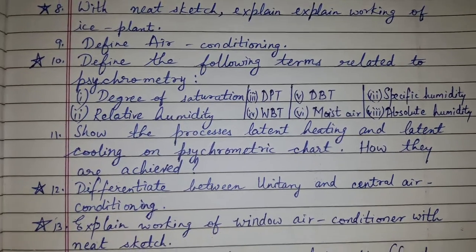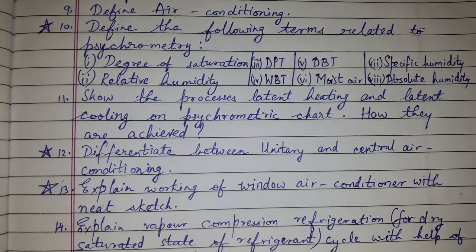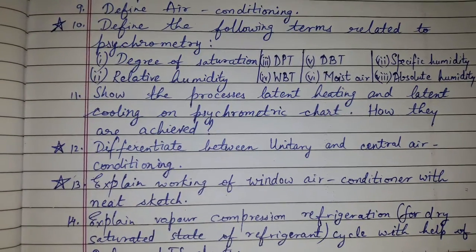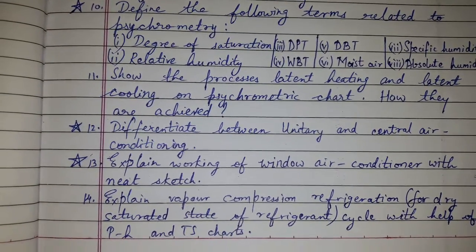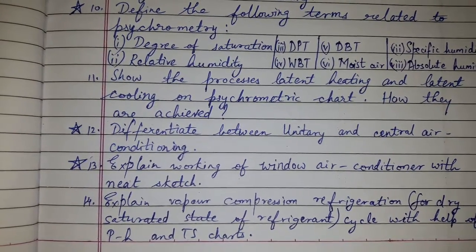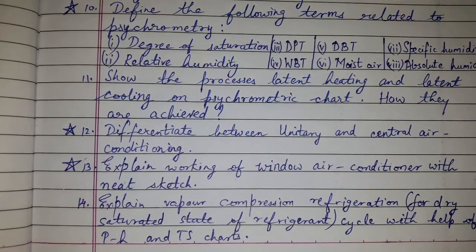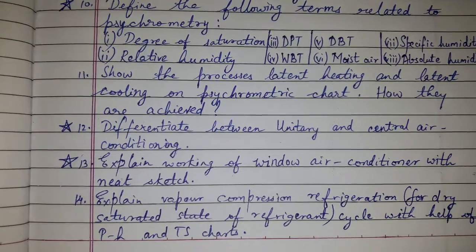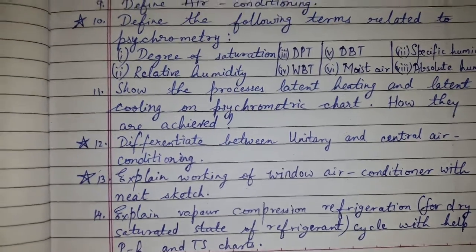Differentiate between unitary and central air conditioning. Explain the working of a window air conditioner with a neat sketch. Explain the vapor compression refrigeration cycle for a dry saturated state of the refrigerant with the help of pH and TS charts.